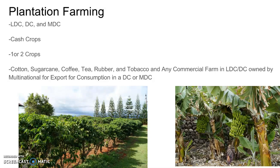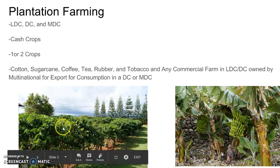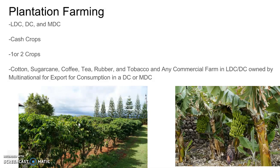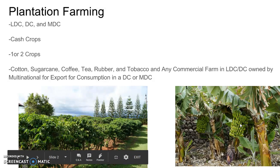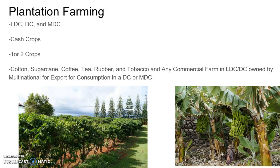Tobacco is also plantation style — grown in the United States in states like Tennessee, North Carolina, and Kentucky. Any commercial farm in LDCs or DCs owned by a multinational for export and consumption in a DC or MDC is plantation style — even drug crops. For example, Chiquita bananas are grown on big plantation farms in Central America like Guatemala, owned by multinational corporations, with workers paid very little and the product exported for consumption in MDCs.